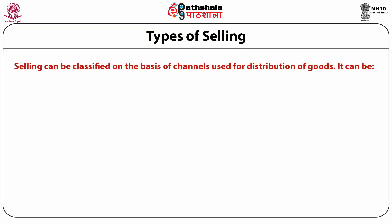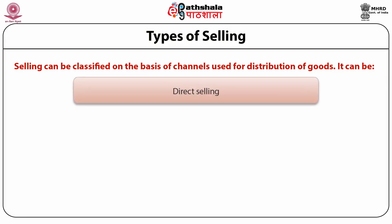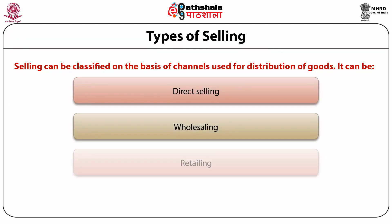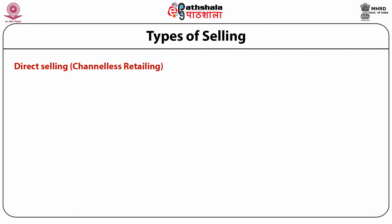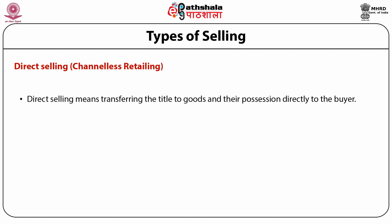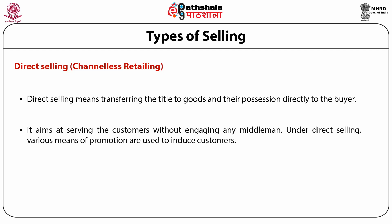Selling can be classified on the basis of channels used for distribution of goods. It can be direct selling, wholesaling, retailing, and franchising. Direct selling is also known as channelless retailing. It means transferring the title to goods and their possession directly to the buyer, aiming to serve customers without engaging any middleman.